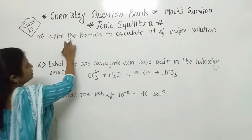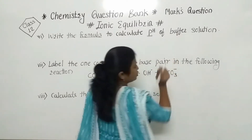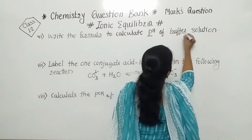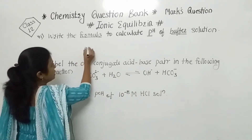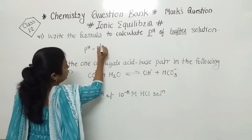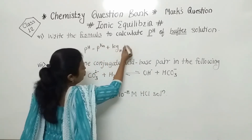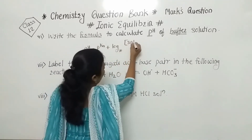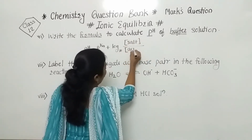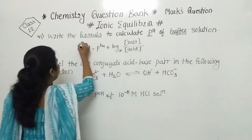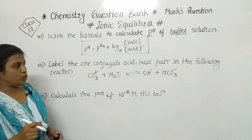The sixth question: write the formula to calculate pH, but it is not normal pH — it is for a buffer solution. The formula is: pH = pKa + log₁₀([salt]/[acid]). This is the formula used to find out the pH of a buffer solution.